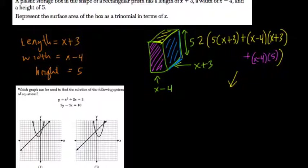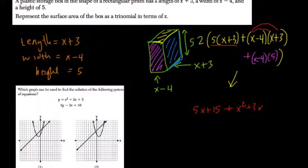So first we have 5 times x plus 3. That's 5x plus 15. Then x minus 4 times x plus 3. Well, x times x is x squared. x times 3 is 3x. Negative 4 times x is negative 4x. And negative 4 times 3 is negative 12. And then we have 5 times x minus 4. That's 5x minus 20.